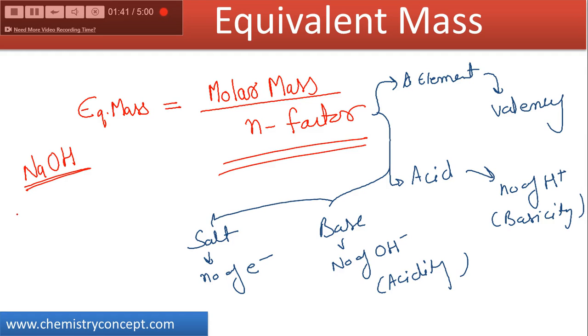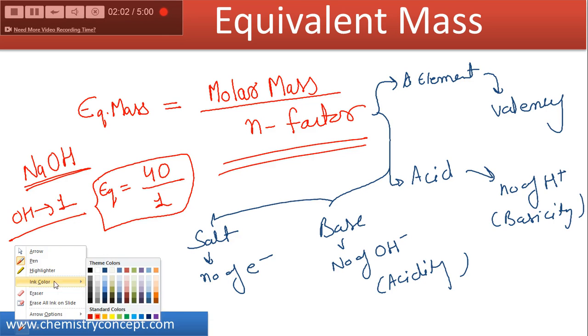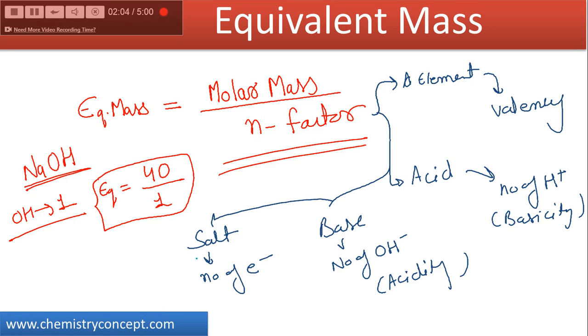a base and its basicity is, its acidity is one, so n-factor is one. So equivalent mass would be the molar mass, that is 40, divided by n-factor which is one here. So equivalent mass here is equal to molar mass. Now let's have a look at equivalent mass of, let's say, HCl.